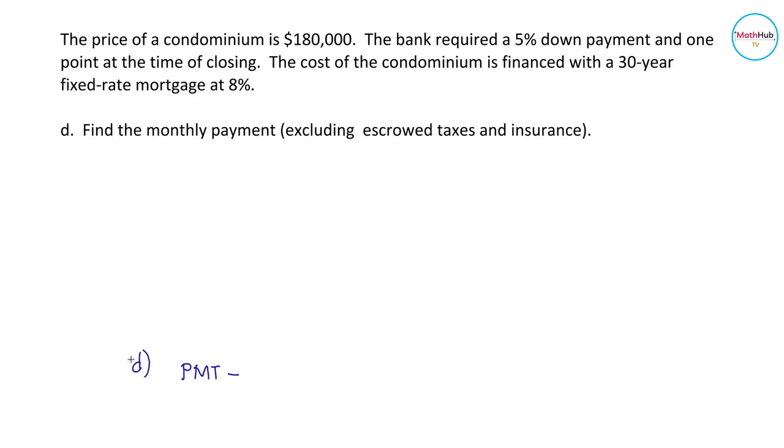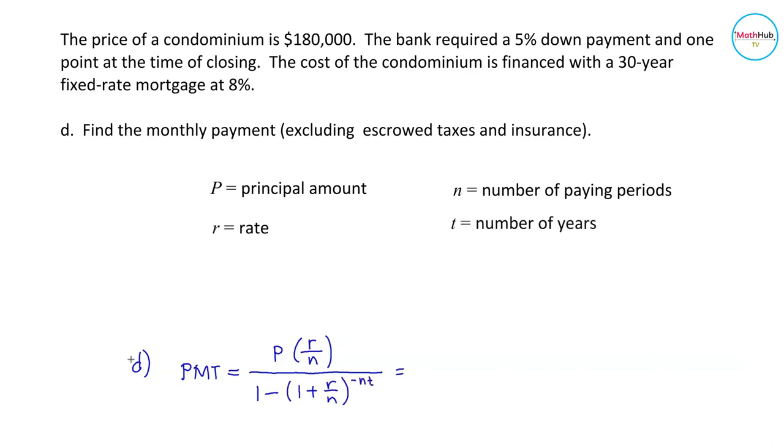So PMT equals P, the principal amount borrowed, times rate over N. N is the number of paying periods. In this case, since we are computing for monthly payment, N is 12. So you have 1 minus 1 plus R over N raised to negative NT. Let's plug in the information we have.